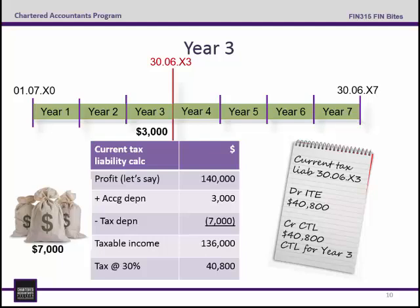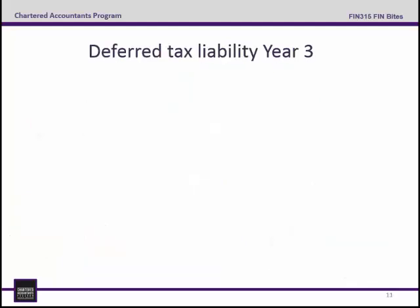Remember, it's important to show a narration in your journal entry. That's the current tax liability for year three.